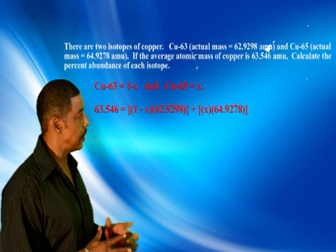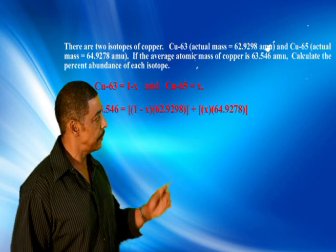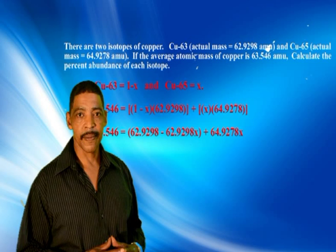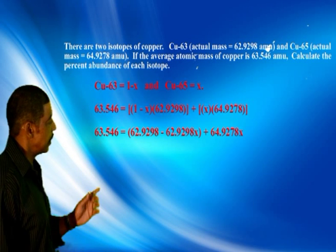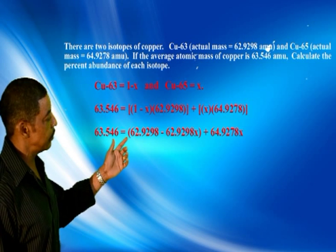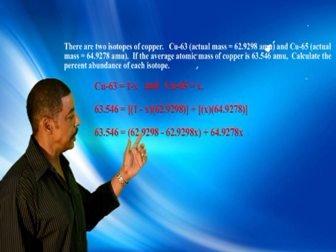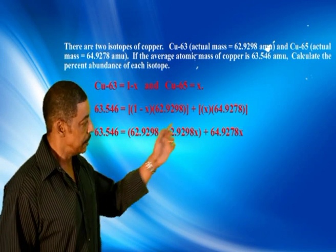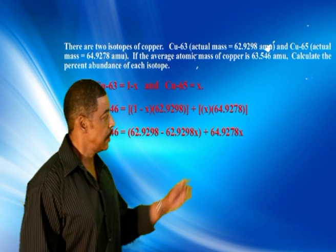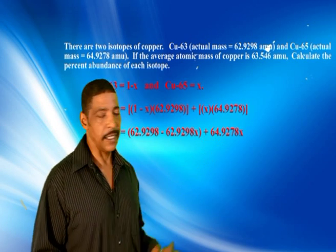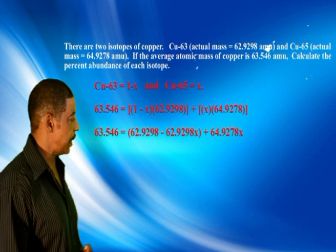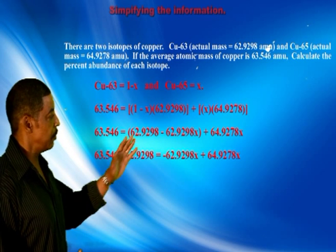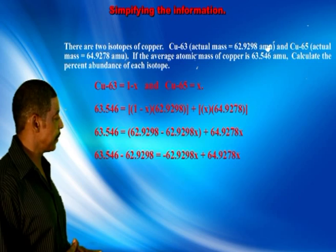To this product we add x times 64.9278 amu. Expanding gives: 63.546 = 62.9298 minus 62.9298x plus 64.9278x. We then simplify by subtracting 62.9298 amu from each side of the equation.